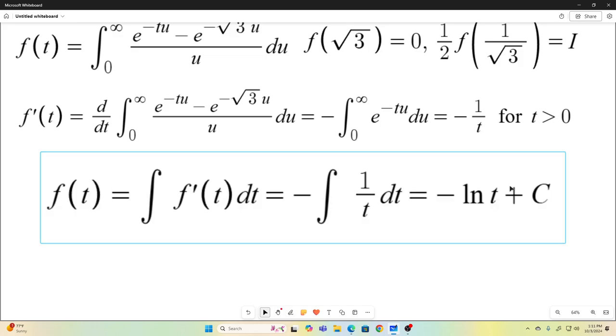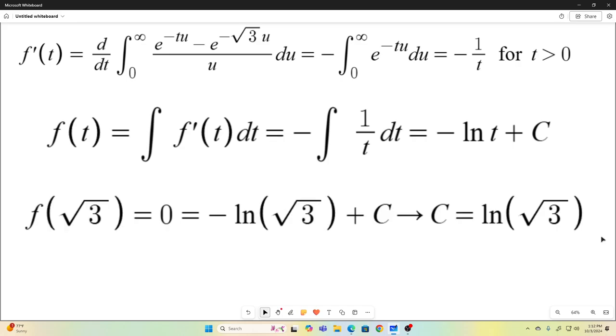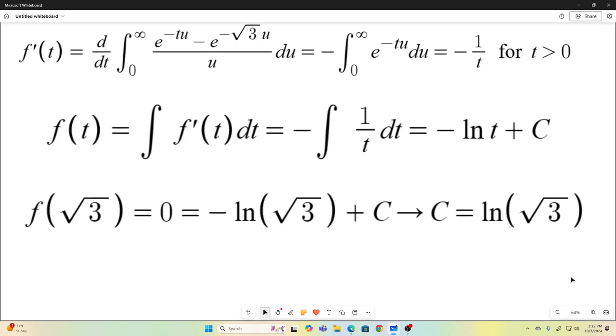Next, we want to get back to f of t, so we integrate our expression for f prime of t, which is negative 1 over t. We get negative natural log t plus C. Now we use the fact that if we evaluate our function at t equals square root of 3, we get 0. So we set 0 equal to this when t is square root of 3, which gives us a C value of natural log square root of 3.